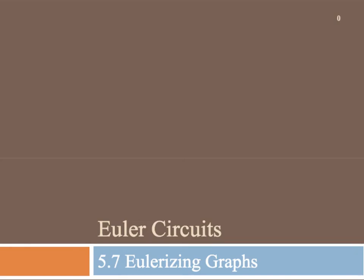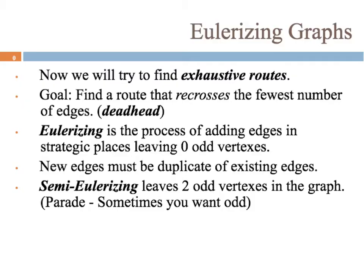This is the last section of the Euler Circuits chapter: Eulerizing Graphs. For this last part, when we're given a graph, we want to find some exhaustive routes. The goal is to find a route that recrosses the fewest number of edges — we're going to call it a deadhead when we have to recross. Sometimes we're inevitably going to have to recross because we have no other choice, but we want to recross the least amount of times possible.